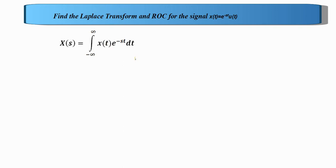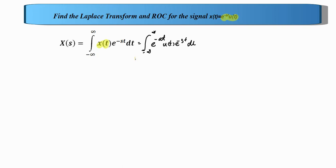In place of x of t, we substitute this particular signal. The equation becomes the integral from minus infinity to infinity of e raised to minus at into u of t into e raised to minus st dt. Here t is the variable, and we can see that there is a non-trivial signal which is u of t.